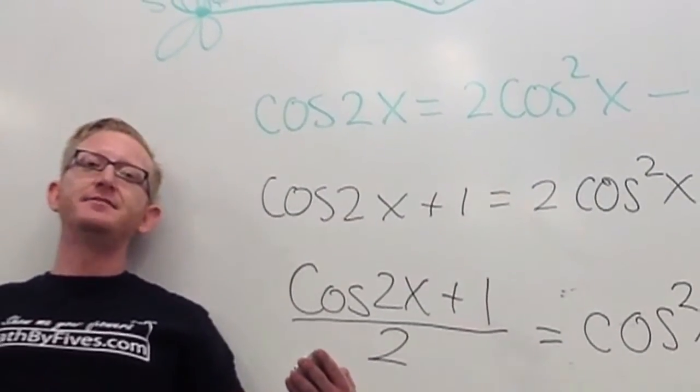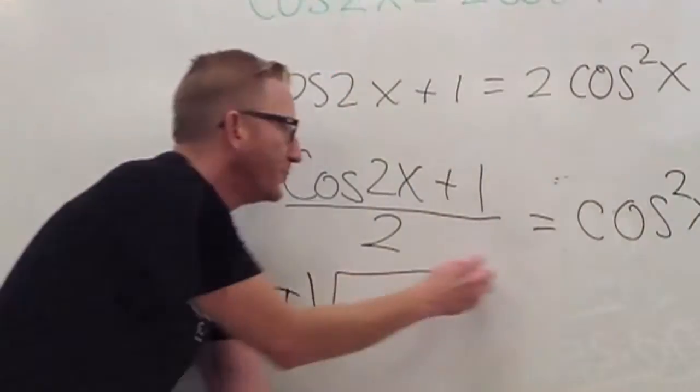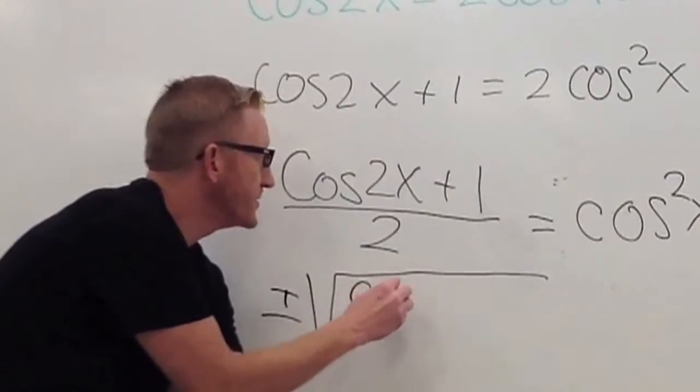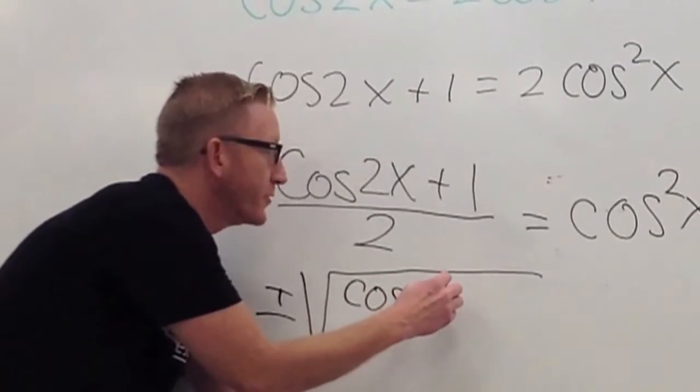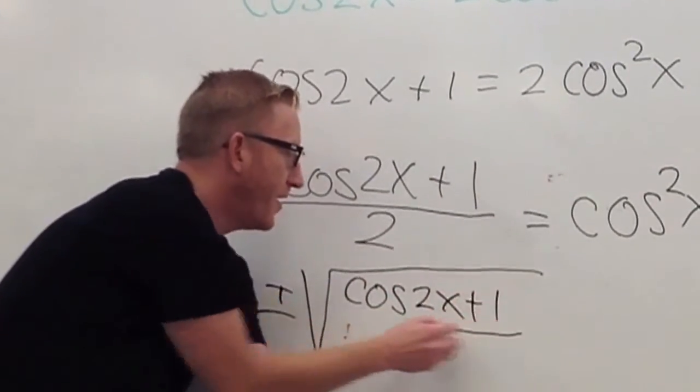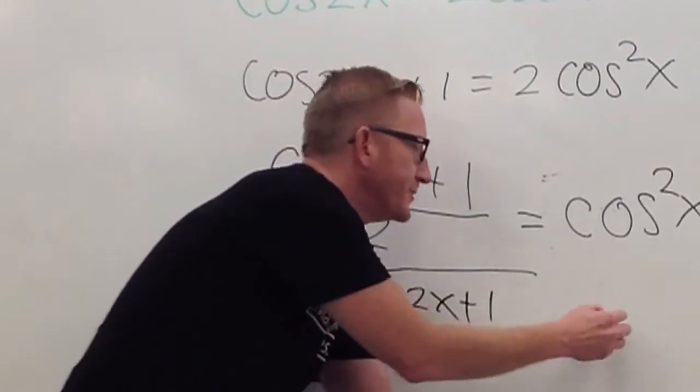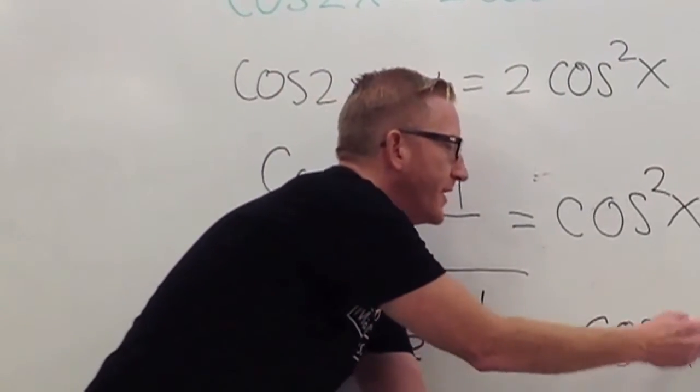but I'm not going to forget the plus or minus. The square root of the cosine 2x plus 1 all over 2, that's going to be equal to the cosine of x.